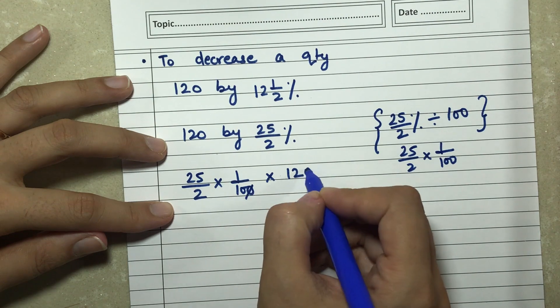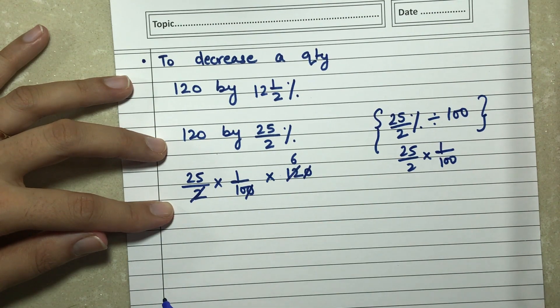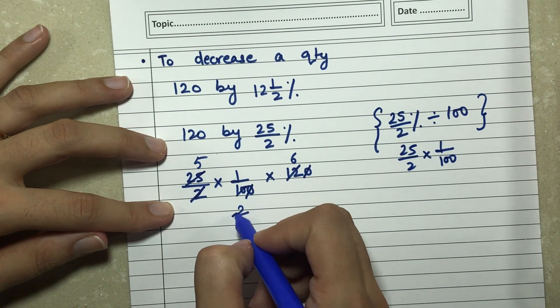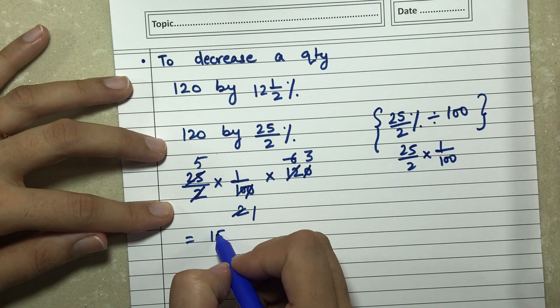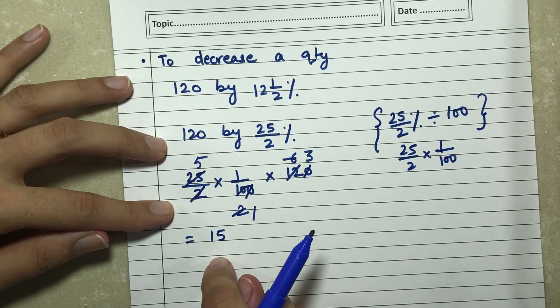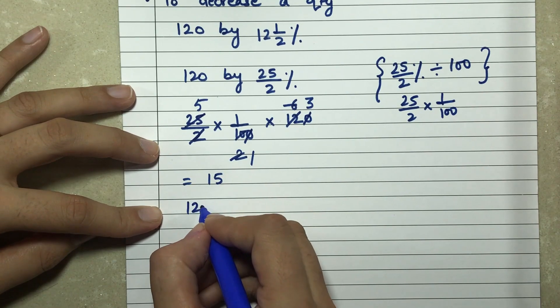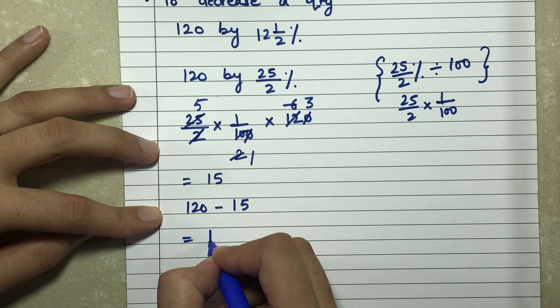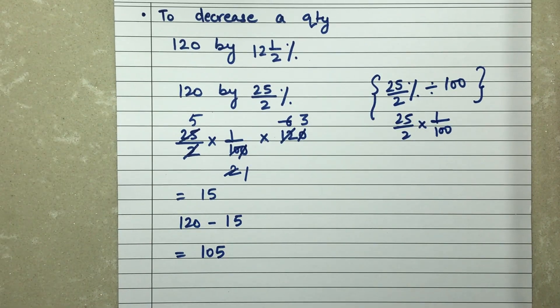Let us come back to this. If I do this, we cancel 2, 6, 12, 5, 5, 0, 5, 2, 2, 1, 2, 3, so the answer becomes 15. So 25 by 2 percent of 120 is 15. To decrease the quantity, I simply do 120 minus 15, which gives me 105. So this is how I decrease a quantity.